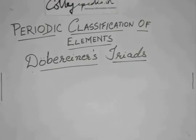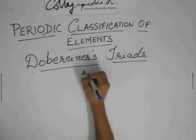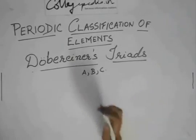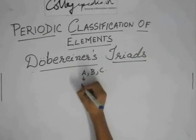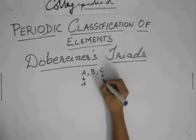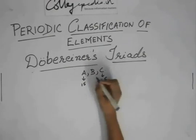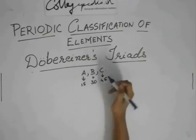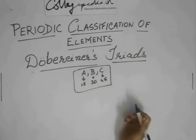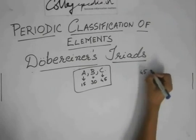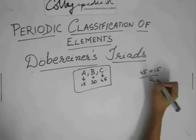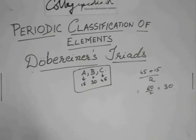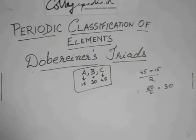So you can get questions like: suppose A, B, C are some hypothetical elements. The atomic weight of A is 15, the atomic weight of C is 45, and the atomic weight of B is 30. So do these form a Dobereiner's triad? You just put in the formula: 45 plus 15 by 2, which is 60 by 2, which is 30. And 30 is the atomic weight of B, so they form a Dobereiner's triad. Very simple questions.